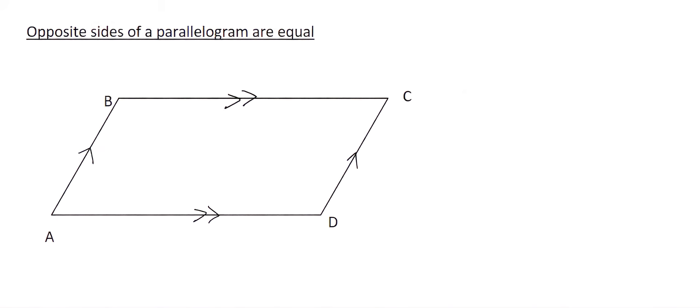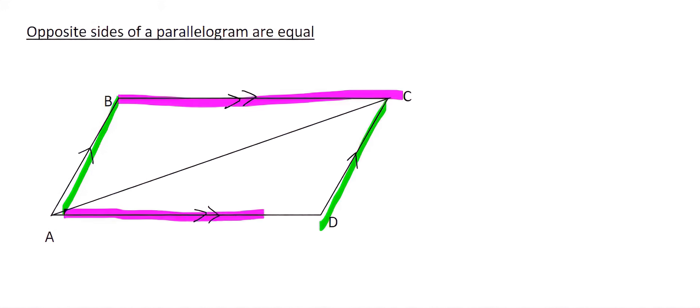And so something that we need to do that makes this really easy is to simply include a diagonal line. Now what we can do, for example, is try to prove that this length is the same as that length, and this length is the same as this length.